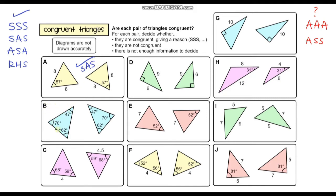For question B, notice we've got three angles and they are the same for both triangles. You may be tempted to say that if we've got three angles the same then the two triangles must be the same — but no, that is not necessarily the case, because we're not given any information about the side lengths. AAA is not a congruency axiom. I'm not saying they're not congruent; all I'm saying is that we need more information — not enough information.